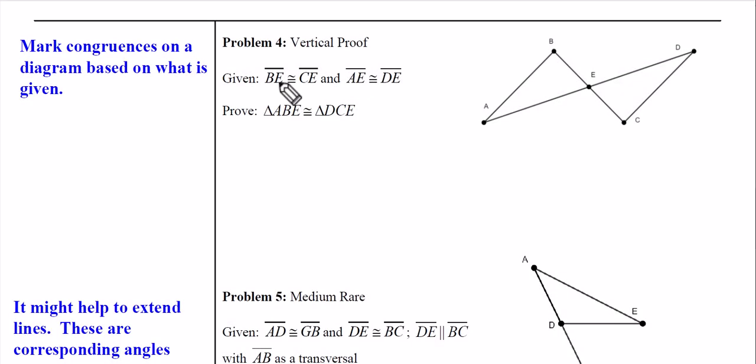So let's see what they've given us here. BE is congruent to CE, AE, DE. And you'll notice that this time the triangles are kind of rotated. So let's label what they gave us. BE is right here. CE corresponds to that.